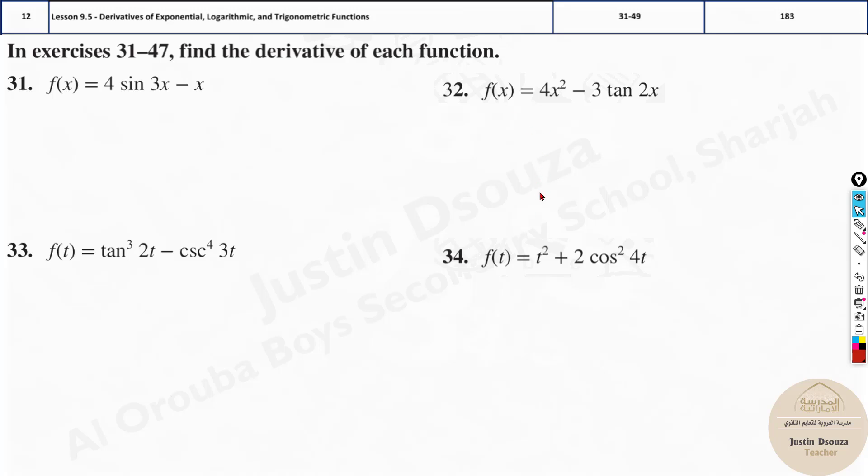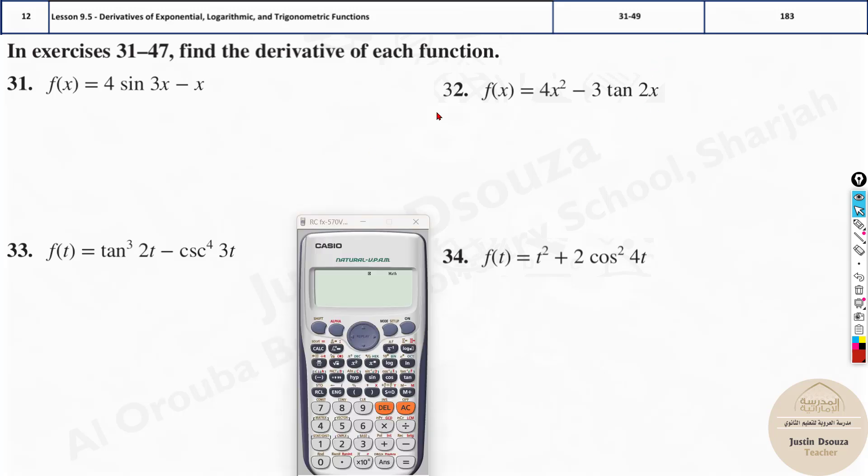You might think whether this can be solved in calculator. Yes, absolutely, just like we did in the previous video. But here you need to follow some rules. First, the default mode in your calculator will be degrees. You need to convert to radian. That's by shift mode and press option number 4. Now it's in radian mode.